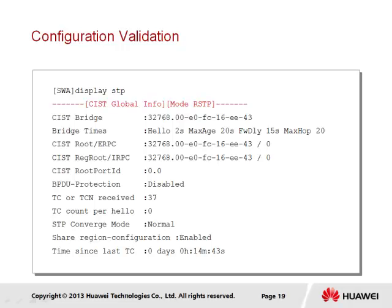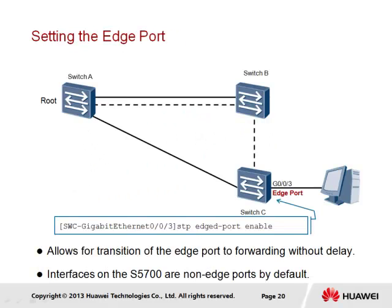The display stp command can be used to verify that RSTP has been enabled as the current protocol on the switching device. The same principles apply as demonstrated for STP, enabling us to determine the root bridge as well as the designated switch for the segment. In this instance, we can see that the displayed output is that of the root bridge. For port interfaces not participating as part of the spanning tree topology, such as those connected to end stations, the edge-port enable command can be applied.